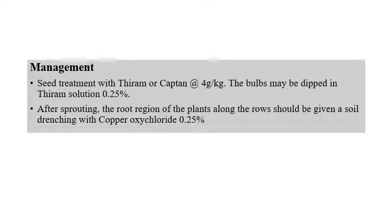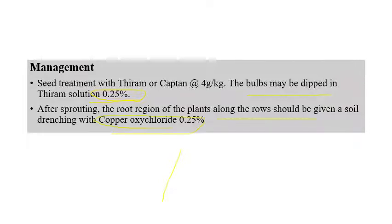For management of Pythium Root Rot: seed treatment with Thiram or Captan at 4 grams per kilogram of seeds. Bulbs may be dipped in Thiram solution at 0.25 percent. After sprouting, the root region and rows can be given soil drenching with Copper Oxychloride at 0.25 percent to effectively manage this disease.